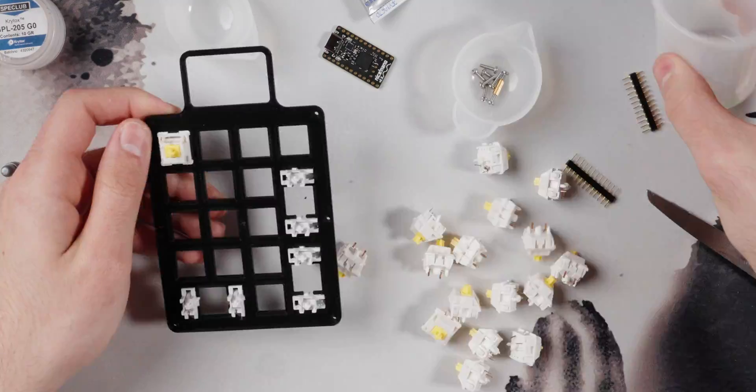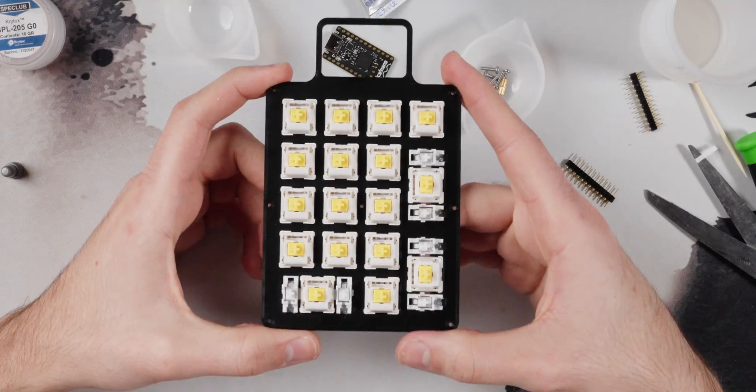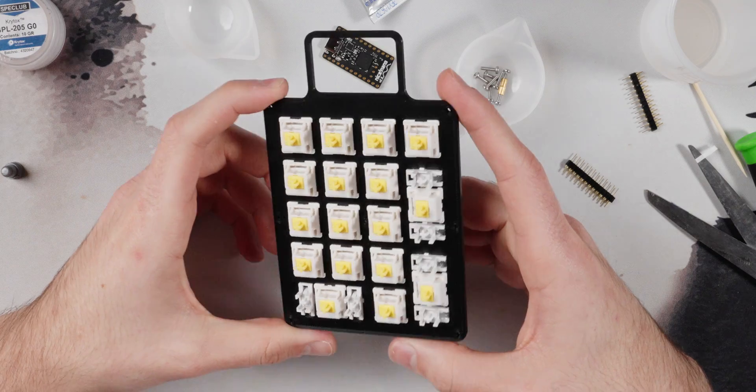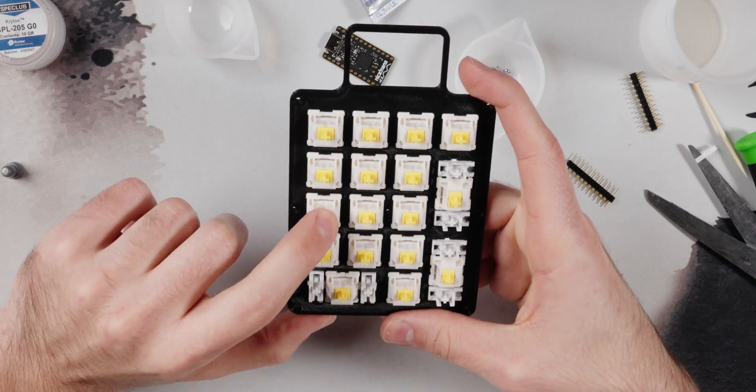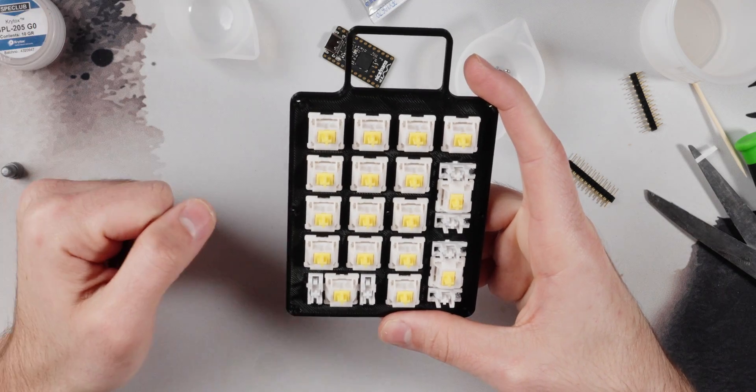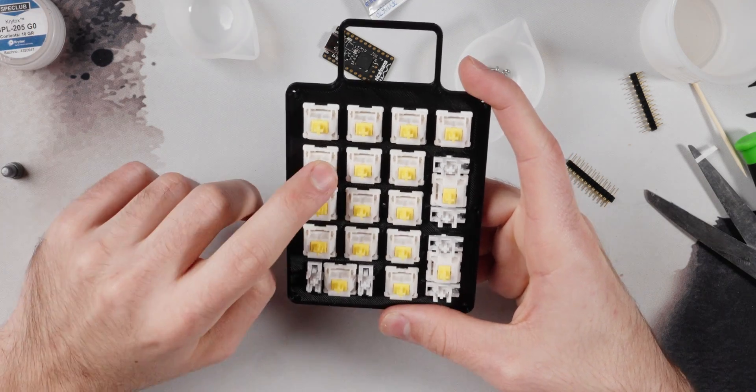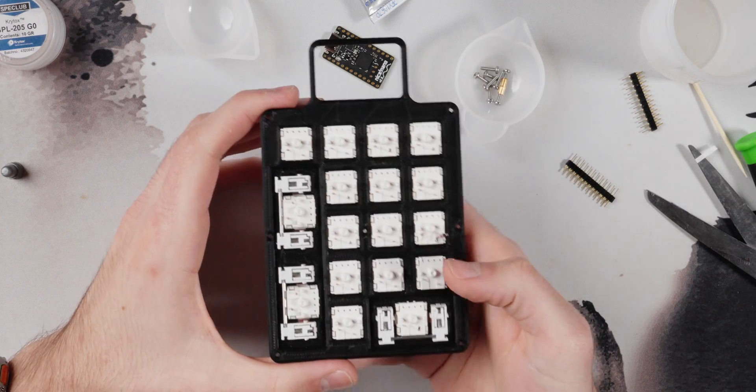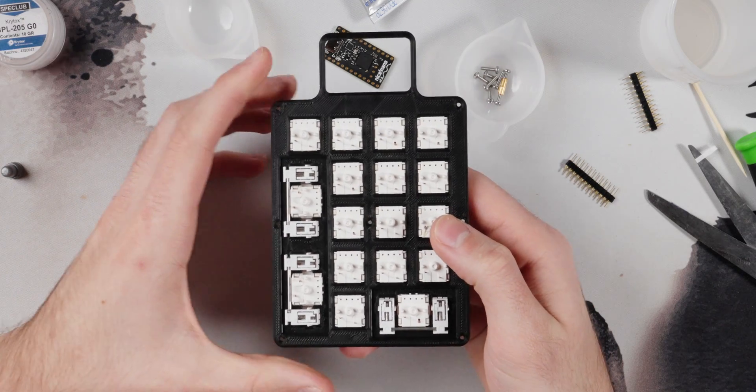Now all the switches are on the actual plate, and these are NK yellow silk - NK silk yellow switches. Love these switches, I think they'd be very nice for a numpad. So those are on there and now we can begin actually soldering everything. But before that, let's jump out and actually talk.